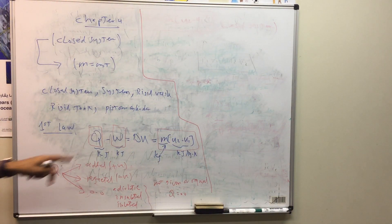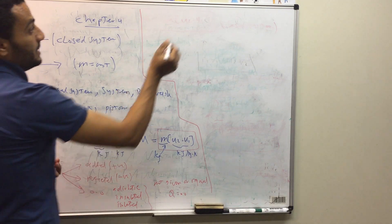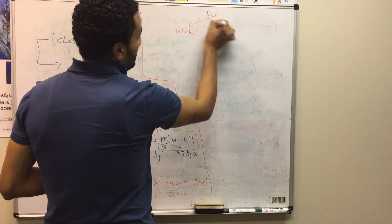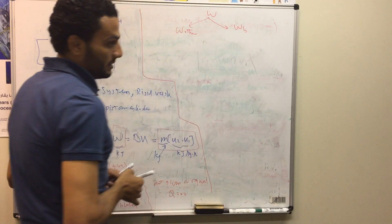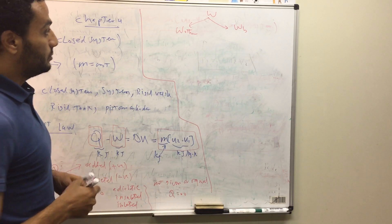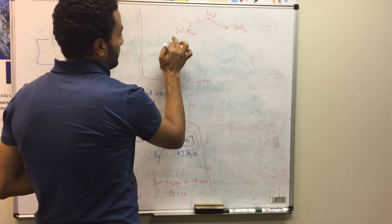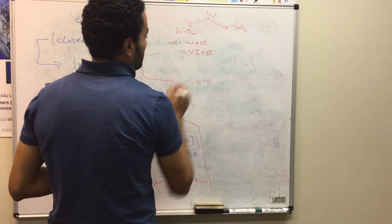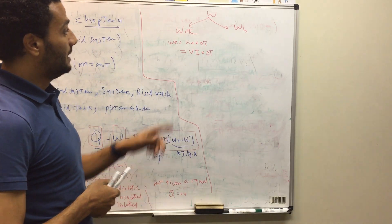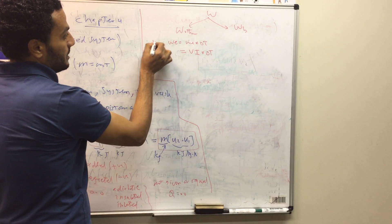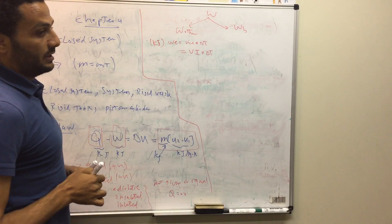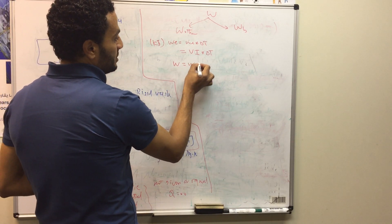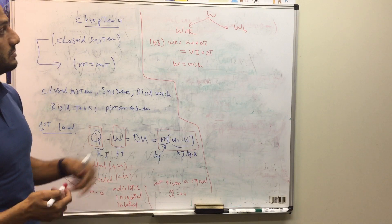The second term in Q minus W equals ΔU is the work, W. This work can be any other kind of work — other than boundary work. For example, electrical work, which equals electrical power multiplied by Δt. Electrical power is voltage times current (V × I) in kilowatts, multiplied by Δt, giving work in kilojoules. If we have an electrical heating coil, this formula applies. If we have a paddle wheel, the work equals the shaft power of that paddle wheel.